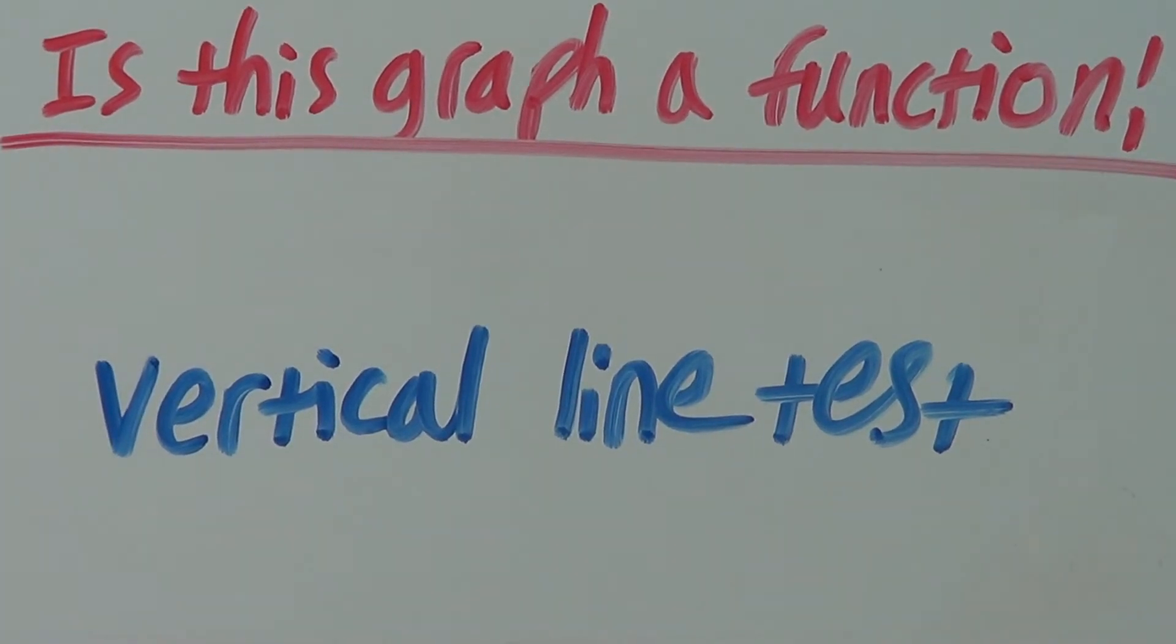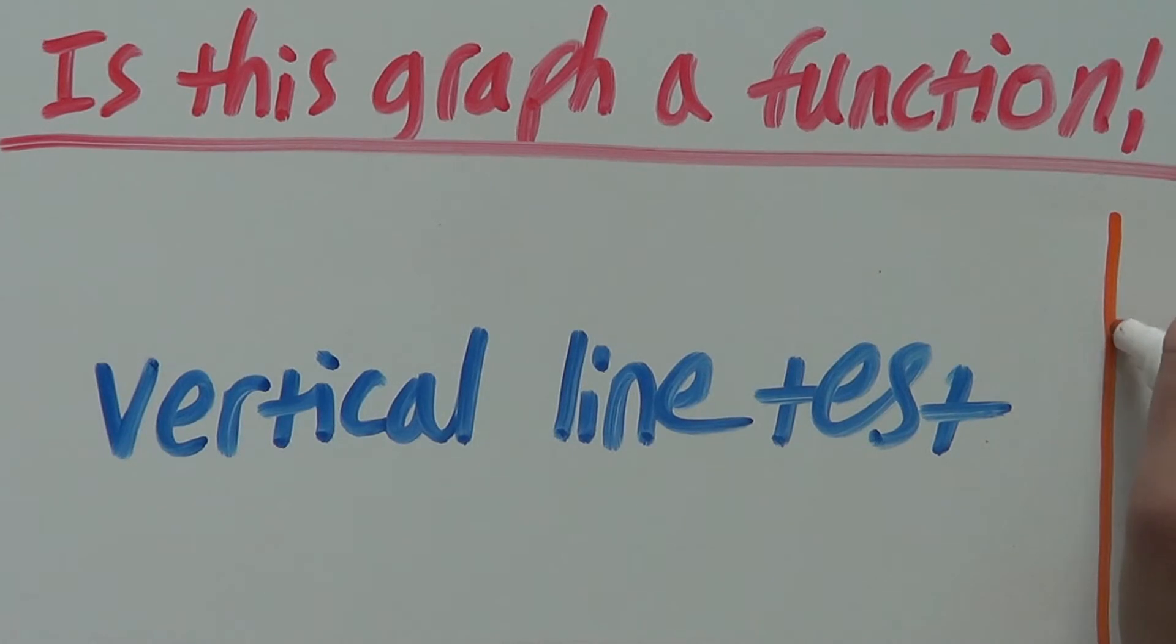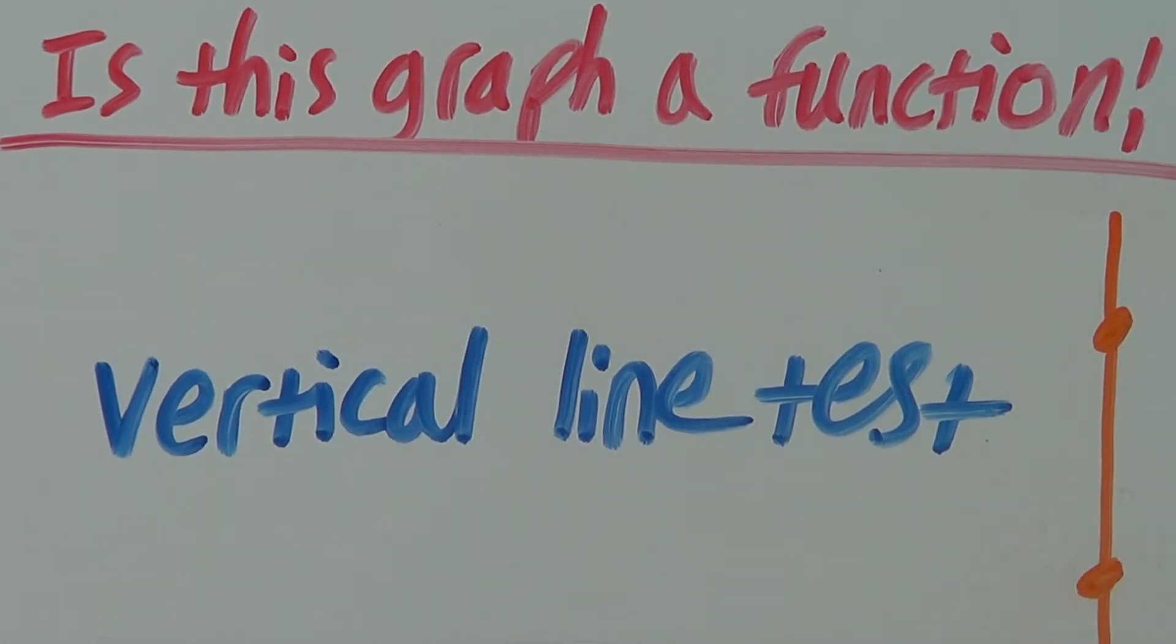So the Vertical Line Test is where we have a graph and we draw a vertical line like this. And if this line crosses more than one line or has more than one intersection, say here and here, at any point on that graph when it is vertical, that graph is not a function.